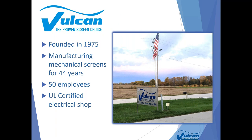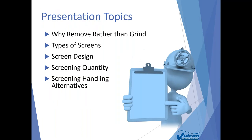Vulcan was founded in 1975. Predominantly, what I want to point out is the UL listing on our electrical shop. This is something that, when it comes to screening and screenings handling equipment and wastewater equipment broadly, differentiates us. Many companies use outside electrical panel building shops; we keep this in-house because we feel there are advantages on both the design and operations side. Topics we'll cover today include why we promote removal of screenings rather than grinding, different types of screens, screening design, screenings handling, calculating screenings volume, and how to convey those screenings.